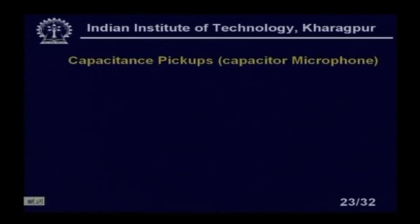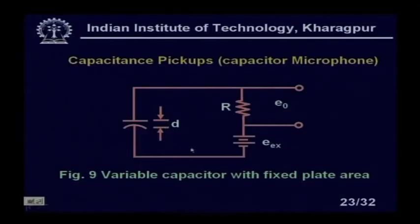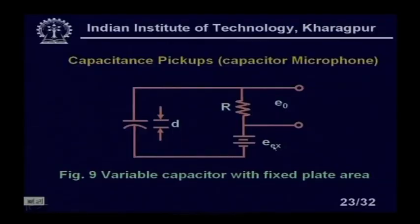The capacitor pickup or capacitor microphone is an important device and is essentially a capacitance sensor where the separation between the plates changes. The separation D changes and output E₀ is measured. The only problem with this type of capacitor pickup is that it is only suitable for dynamic displacement measurement. For static displacement, there is no current flowing through the capacitor, so no output is produced. When I talk, the capacitance between the plates changes and an output is obtained.